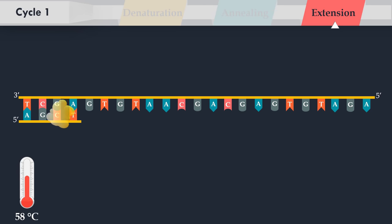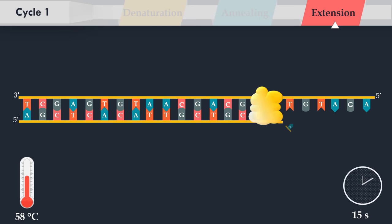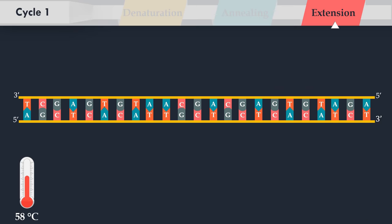In the extension step, the DNA polymerase synthesizes a new DNA strand complementary to the DNA template strand, by adding free nucleotides from the reaction mixture that are complementary to the template in the five-prime to three-prime direction. The temperature at this step depends on the DNA polymerase used.